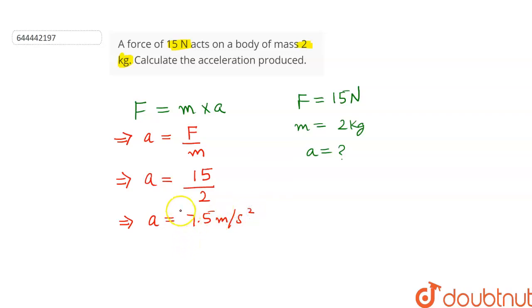So the answer of this question is: if a force of 15 Newton acts on a body of mass 2 kg, the acceleration produced is equal to 7.5 meters per second square.